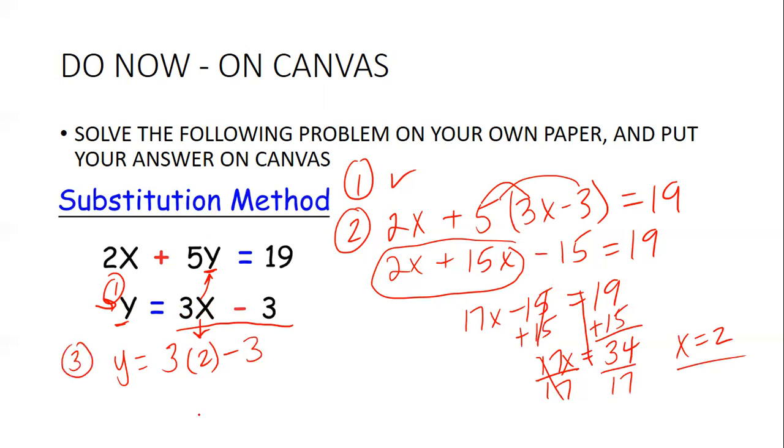Step three is plugging back into the first. And we get y equals 6 minus 3. And what is 6 minus 3? 3. So my solution is 2 comma 3.